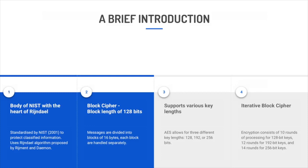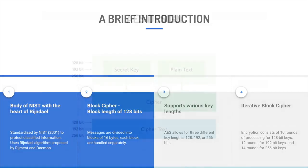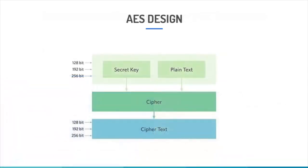With each round applying the same overall transformation function to the incoming block, the number of rounds differs with the key length. As you can see here, the AES encryption works on individual block length of 16 bytes. The encryption further follows variation based on the method of implementation. Here we have the diagram of one single block.